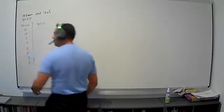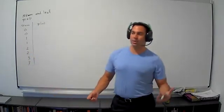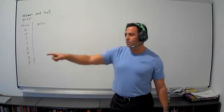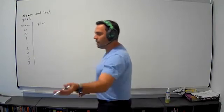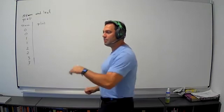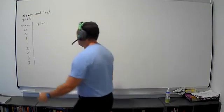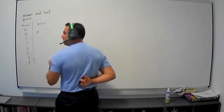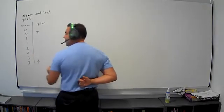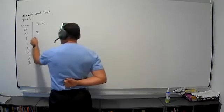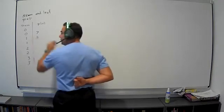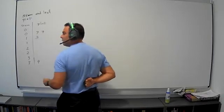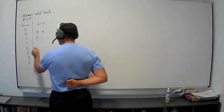And it might not be so apparent right now, but hopefully as I do it you'll see it. So our biggest number is 39, our smallest number is zero. So I'm going to go ahead and read the numbers and I'll start filling out the stem and leaf plot. Here we go — we have seven, we have 39, we have 13, we have nine, we have 25.